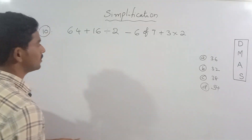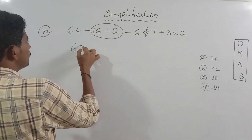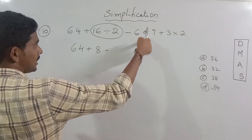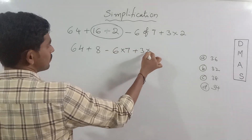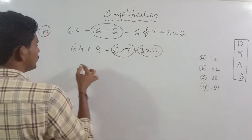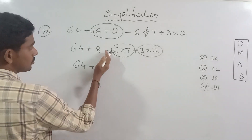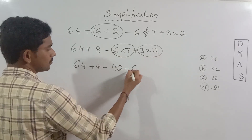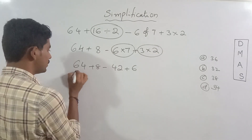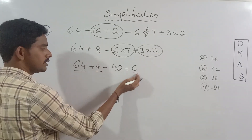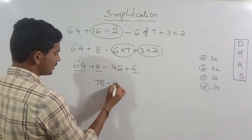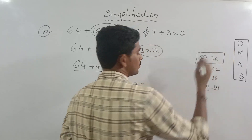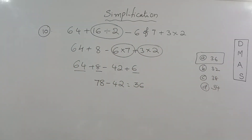10th one: 64 plus 16 is divided by 2, minus 6 of 7, plus 3 into 2. So first do division. 2 table: 16 divided by 2 is 8. Minus, then 6 into 7 is 42, plus 3 into 2 is 6. Positive numbers: 64 plus 8 is 72, plus 6 is 78. Then 78 minus 42 is 36. So 36 is the correct answer.